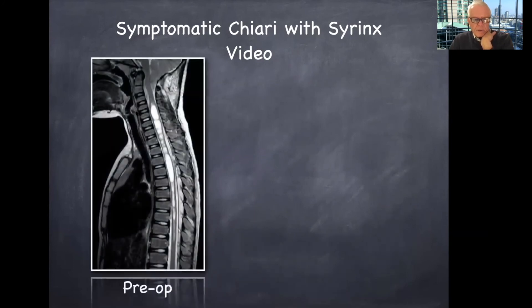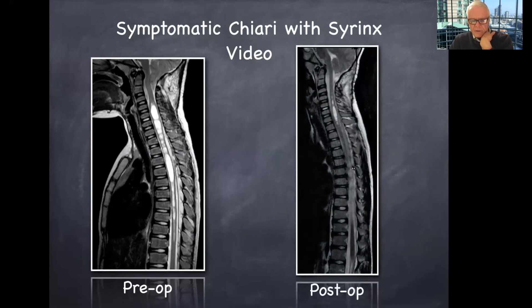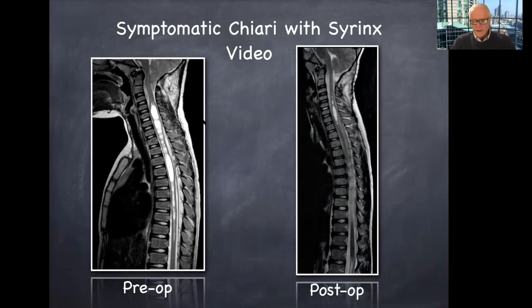Here's the before — a large, multi-septated syrinx. And here's the after. I think you would all agree it's much better in terms of resolution of the syrinx. There's still a tiny syrinx remaining, but you can see the nice rounding of the tonsils, which were quite pointed before. That's the kind of result I'd like to see after this case.